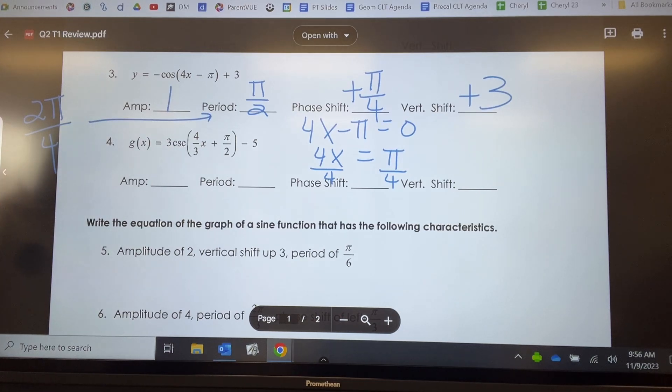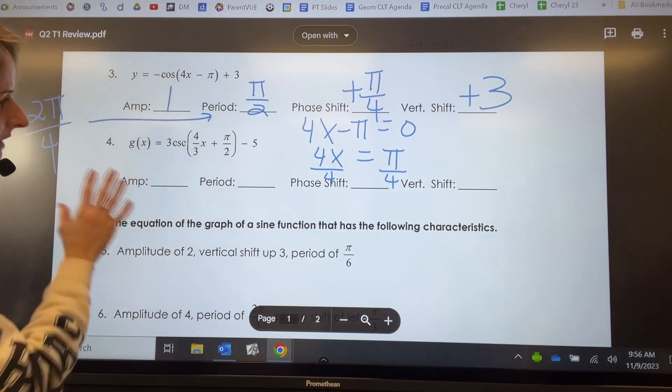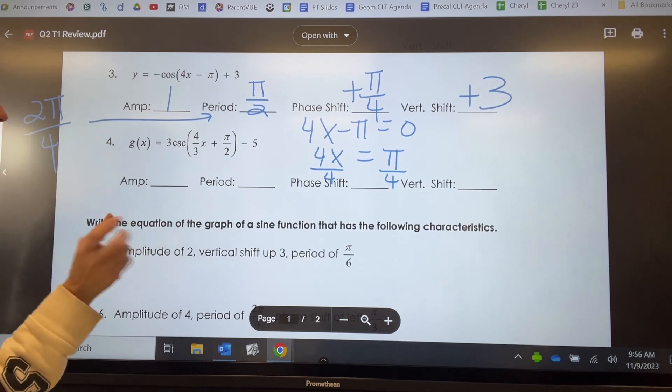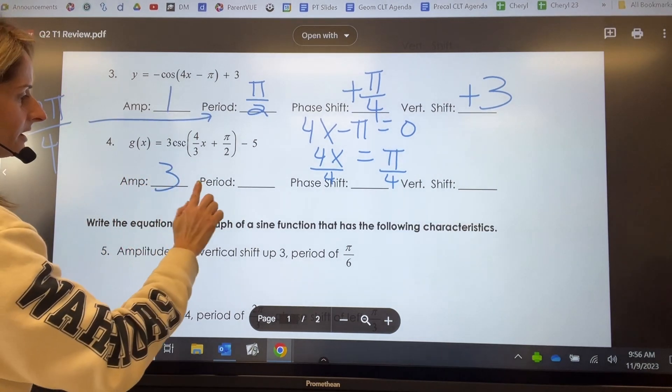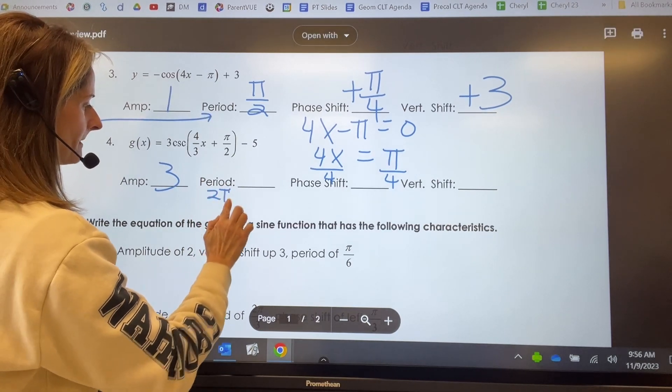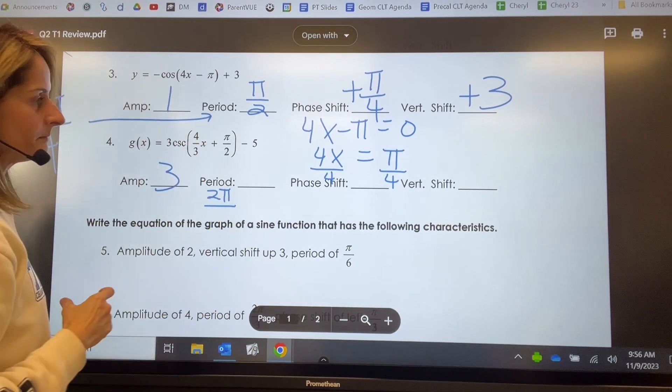So cosecant is the reciprocal of sine. So we're just going to solve this like it was a sine function. The amplitude is going to be three. The period is two pi divided by B. B is four thirds.